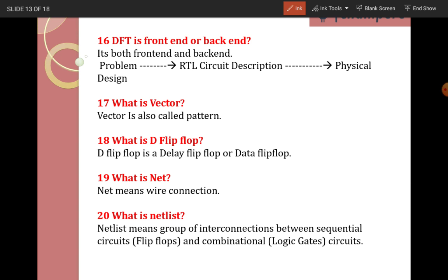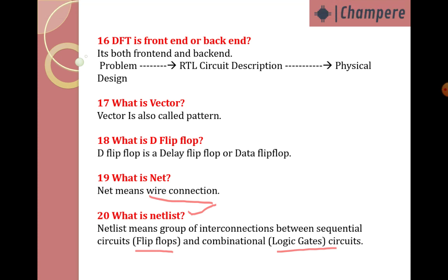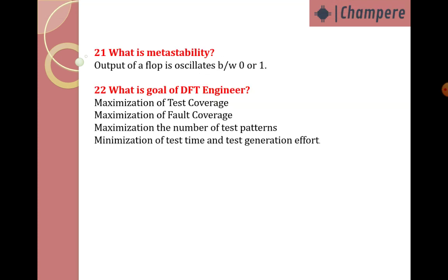What is a netlist? Netlist means a group of interconnections between sequential circuits and combinational circuits. Sequential circuits are flip-flops and combinational circuits are logic gates. The interconnection between these two — sequential circuits and combinational circuits — is known as a netlist.